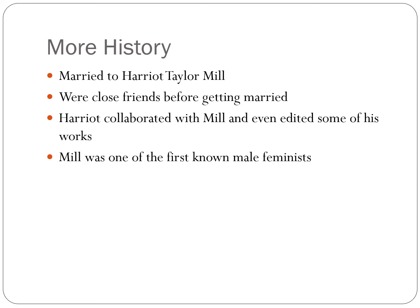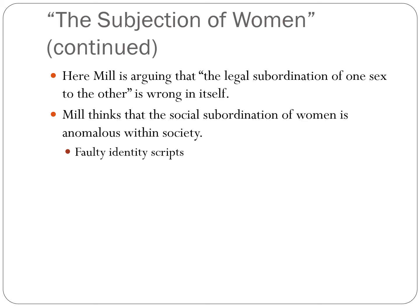One of the interesting things is that Mill, being a political office holder in England during his time, was actually one of the first well-known male feminists. What he argues in The Subjection of Women is that the legal subordination of a sex is wrong in itself — that we should not subordinate or subjugate women simply based on their sex.